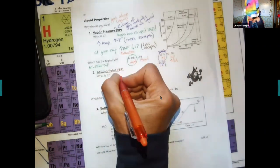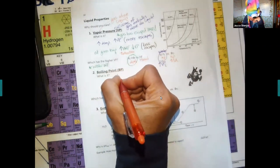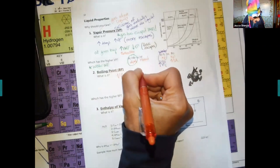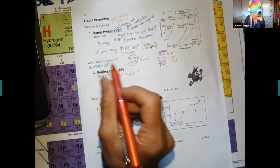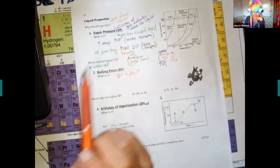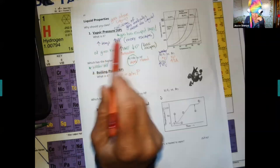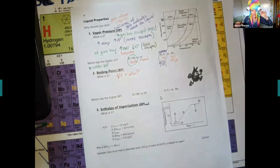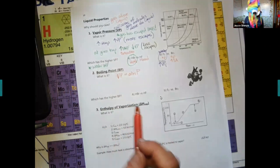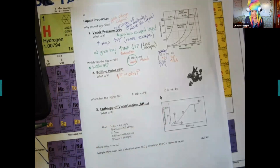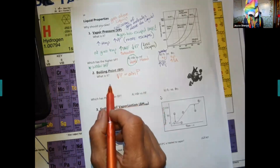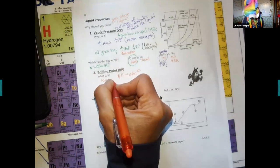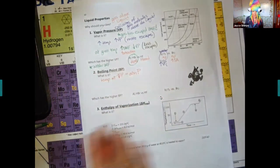Boiling point is when the vapor pressure equals the atmospheric pressure. Real quick, VP in this class, we are talking about vapor pressure. Keep politics out of it. This is the temperature at which vapor pressure equals the atmospheric pressure. That's what this curve is.